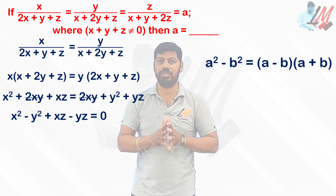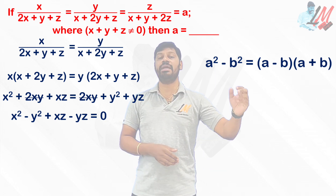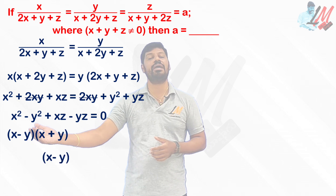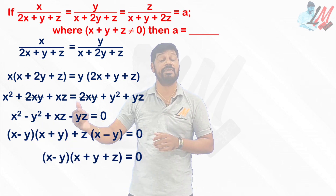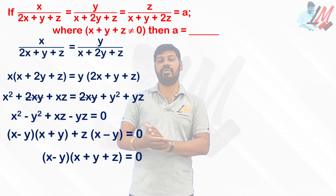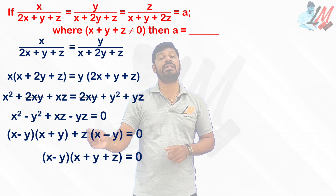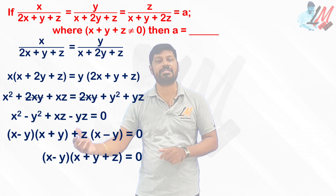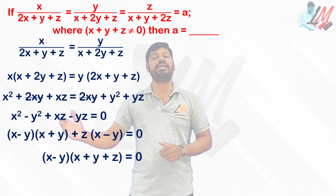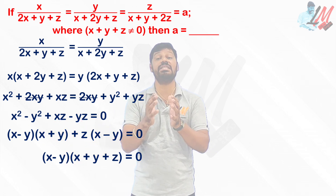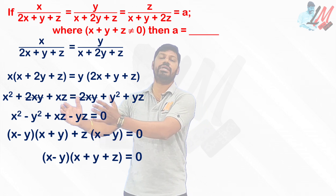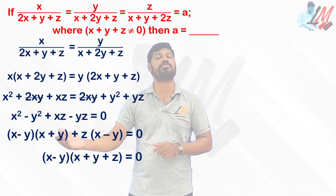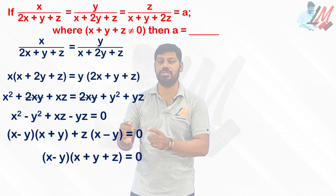From the first two terms, x² − y² is in the form of a² − b², which is the algebraic identity (a − b)(a + b). So x² − y² = (x − y)(x + y). For xz − yz, taking z as a common factor gives z(x − y). So in both terms we see (x − y) as a common factor, giving: (x − y)(x + y + z) = 0.